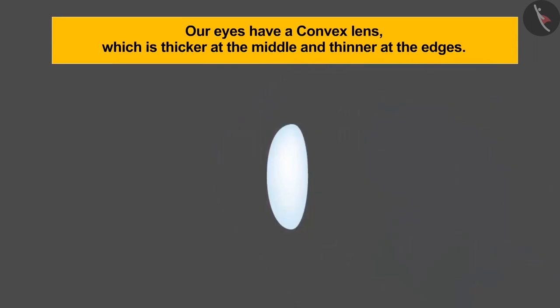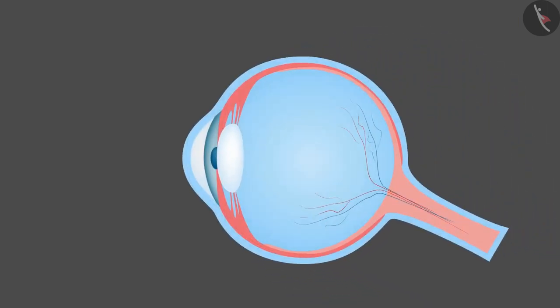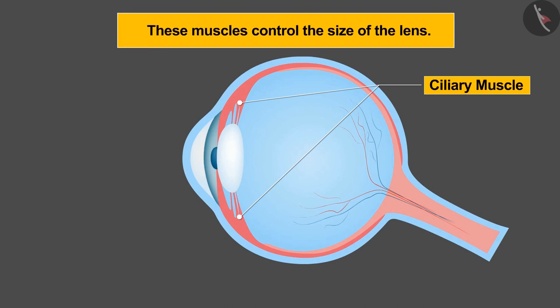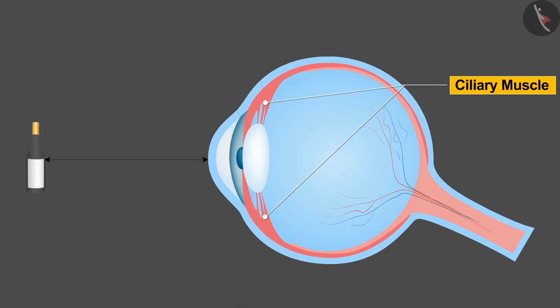Our eyes have a convex lens which is thicker at the middle and thinner at the edges. These lenses are attached to the eyes by the ciliary muscles. These muscles control the size of the lens, due to which we are able to see distant and nearby objects clearly.